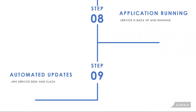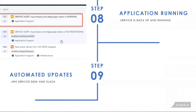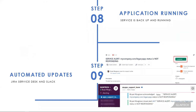The on-call person navigates to that legacy application on the phone, confirms it's up and running and working — the service restart worked. There's an alert showing the application is back up and running. Because it's up and running, you close the alert, and because of the integration with Jira and Slack, closing the alert in Opsgenie also closes the Jira ticket and updates the Slack room to let everyone know the alert is closed.